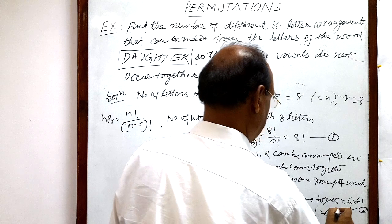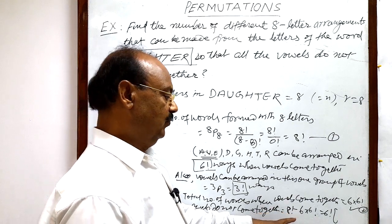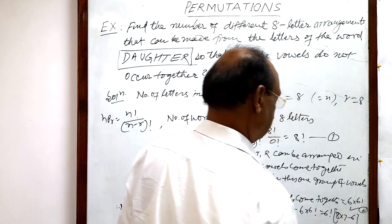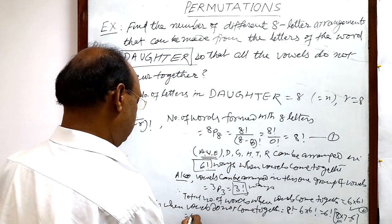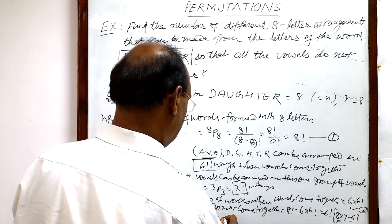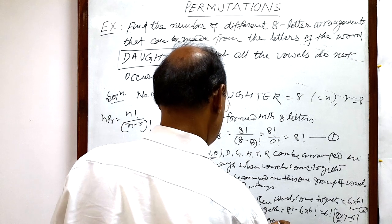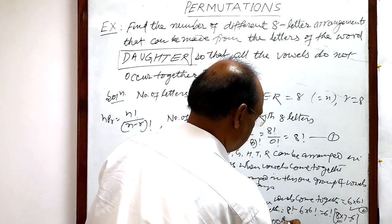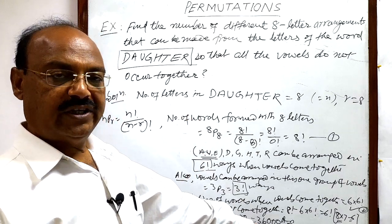Taking 6 factorial as common: 8 factorial equals 8 into 7 into 6 factorial, so we get 6 factorial times (8 into 7 minus 6), which is 6 factorial times (56 minus 6) = 6 factorial times 50. Since 6 factorial equals 720, this gives 50 into 720, which equals 36,000. So the total number of 8-letter words from the letters of 'daughter' where the vowels do not come together is 36,000.